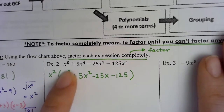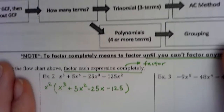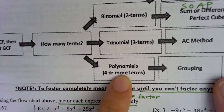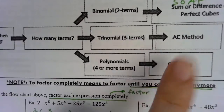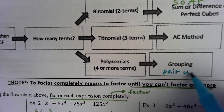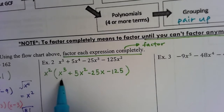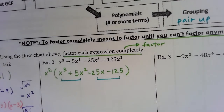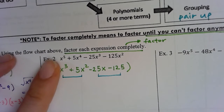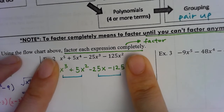Back to the flowchart — step two: how many terms? Inside the parentheses I see four terms. That's not a binomial or trinomial — it's a polynomial with four terms, so I'm going to group. Grouping just means pairing them up. I'll focus on the four terms inside and ignore the GCF out front for now.